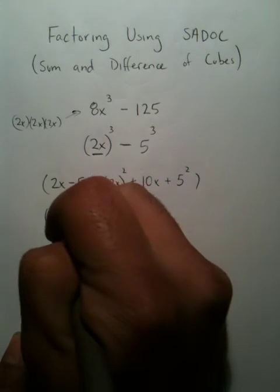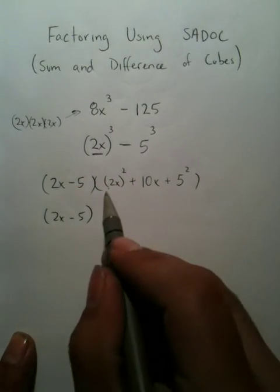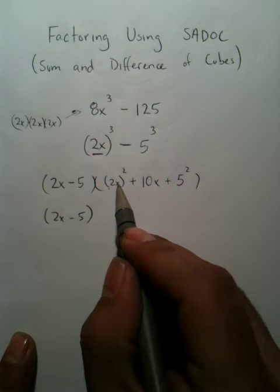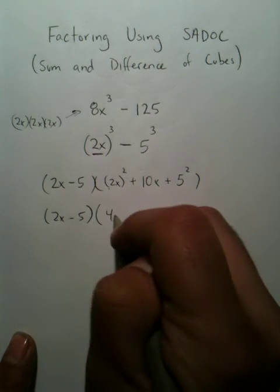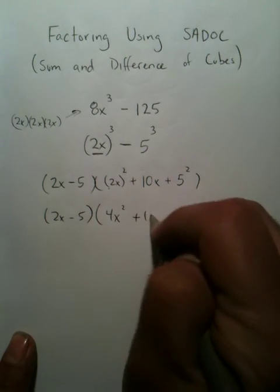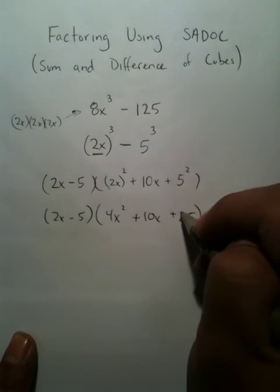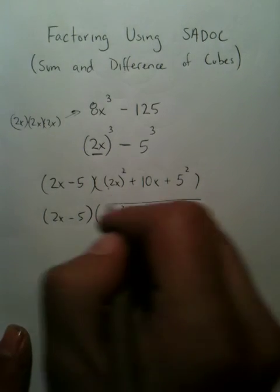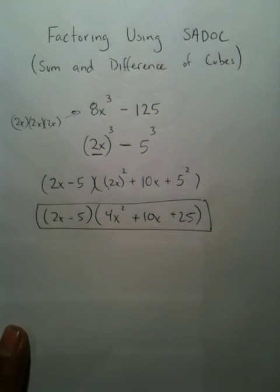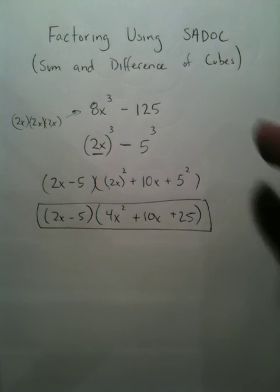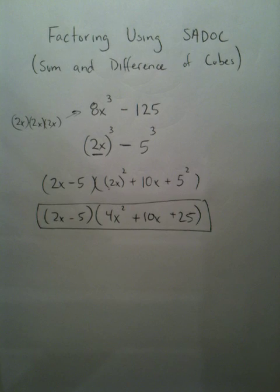This is not the formal answer. You need to square this. 2x times 2x is 4x squared, plus 10x, and you have another square which will make 25. This is the most appropriate answer for factoring a problem with the sum and difference of cubes.